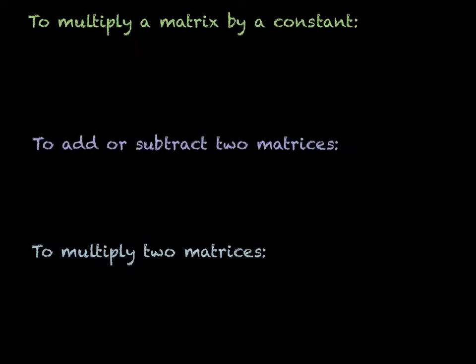So there are three things that we need to know: how to multiply a matrix by a constant, how to add or subtract two matrices, and how to multiply two matrices.